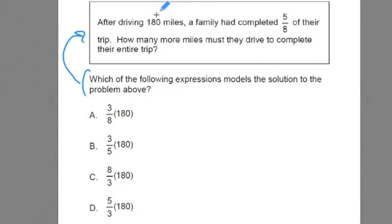Let's think about that for a moment. 180 miles represents what's completed. That can be represented as 5 eighths. We don't know how much is left over. That's what we're trying to figure out. But for now, let's say x. x represents what's left over.